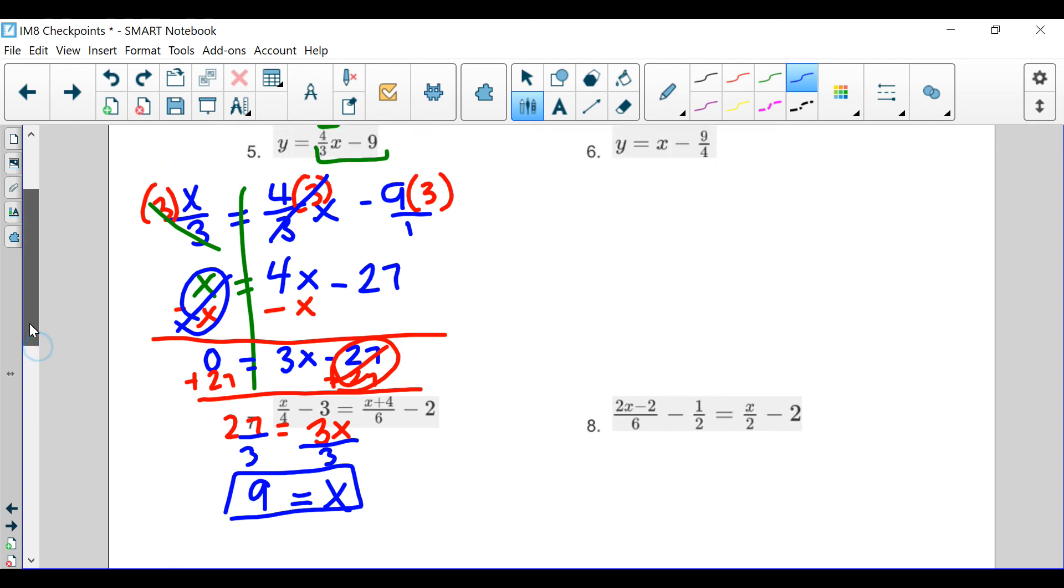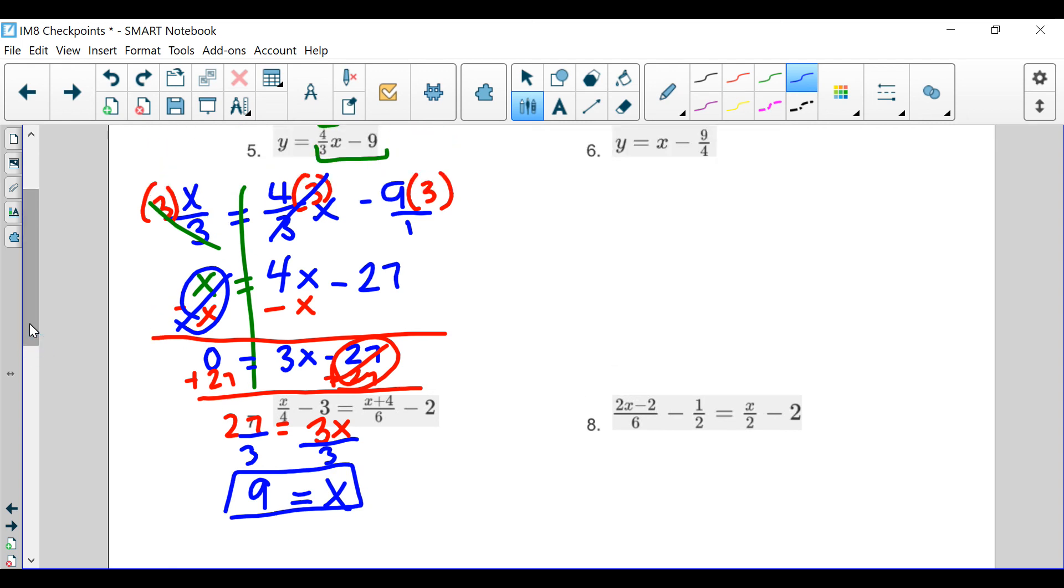We get x is equal to 9. Now, after you know what x is, you're going to solve for y. y happens to be x over 3, which, in this case, if x is 9, all we do is we substitute that x with 9, then divide it by 3. 9 divided by 3 is going to be 3. And, there's your answer. So, we know that our answer in this one was x is 9 and y is 3.